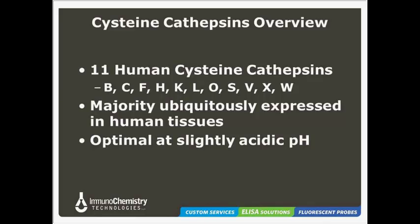There are 11 different human cysteine cathepsins. The majority of these cathepsins are ubiquitously expressed in human tissues, indicating that these enzymes are involved in normal cellular activities like protein degradation and turnover. There are a few exceptions — namely cathepsins K, W, and S — which show some restricted cellular or tissue-specific distribution, indicating that these may have more specific roles. These cysteine cathepsins are optimally active at a slightly acidic pH, such as can be found inside the lysosomes. In fact, they are mostly unstable at neutral pH, and when outside of the lysosomes or extracellularly, they can be rapidly and irreversibly inactivated.